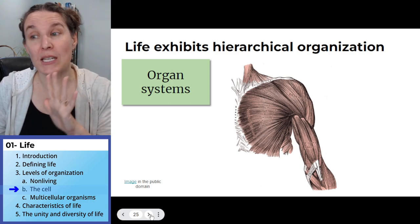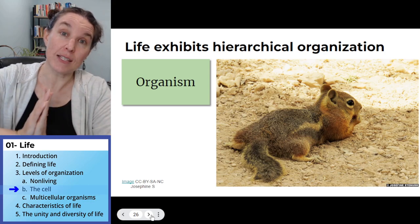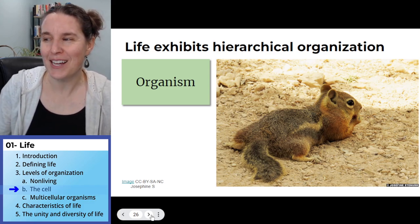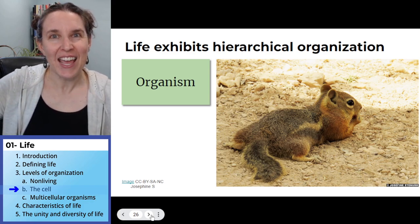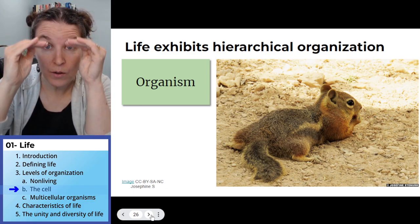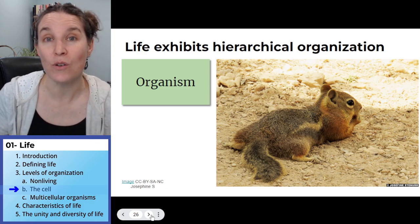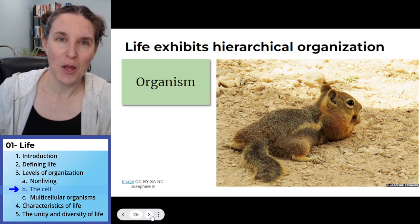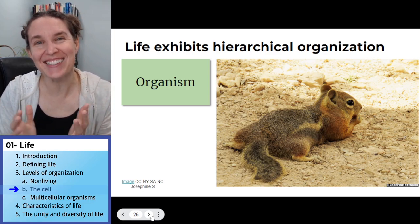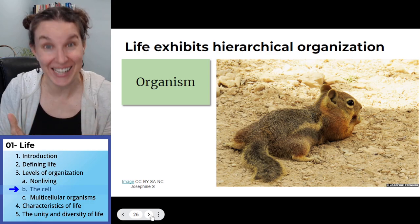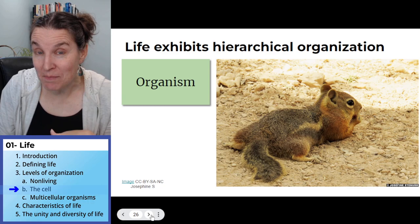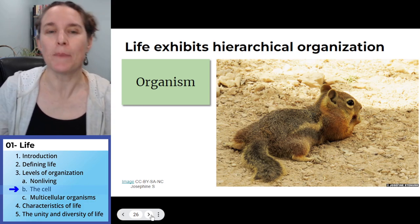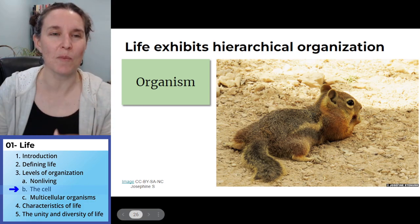If you put a whole bunch of organ systems together, you get an organism. This animal is just hanging out, living its best life in the glorious sun — made up of all those levels of organization we've talked about. Now, just like life is challenging to define, defining an organism may seem intuitive — like, I know I am one organism — but it becomes rather complicated, and we will explore those complications as we go.